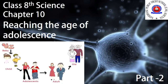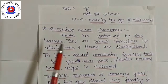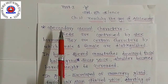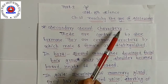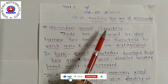Welcome students to the second session from your textbook Chapter 10: Reaching the Age of Adolescence. Today we will continue this chapter. In the last session, we studied about the different stages of life, puberty stage and their changes in the male and female body. Today we are going to discuss about secondary sexual characters.